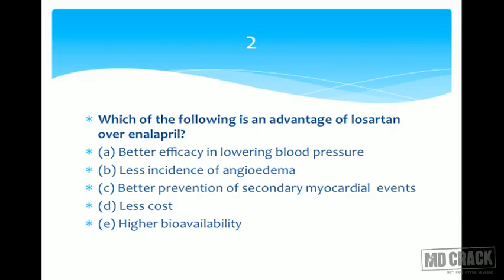Losartan is an ARB — angiotensin receptor blocking agent — which blocks AT1 receptors. Enalapril is an ACE inhibitor. Enalapril acts proximally by inhibiting angiotensin converting enzyme, while losartan acts distally on the angiotensin receptors directly. Both result in similar outcomes: blocked vasoconstriction and reduced aldosterone secretion from the adrenal cortex.